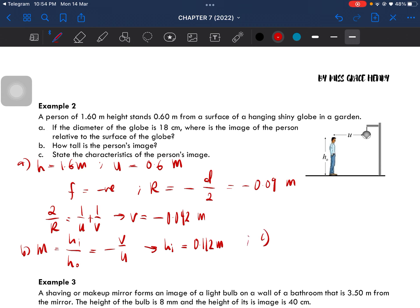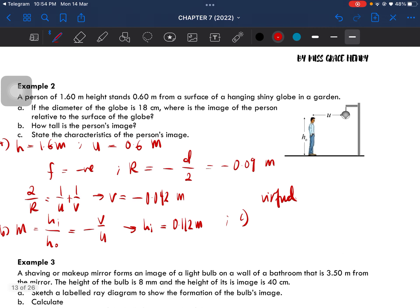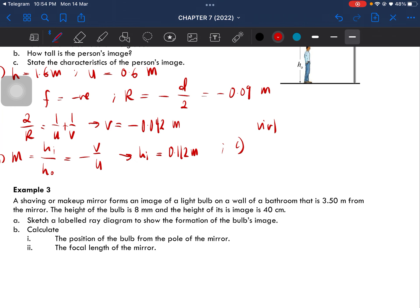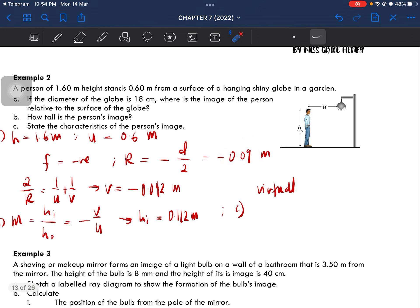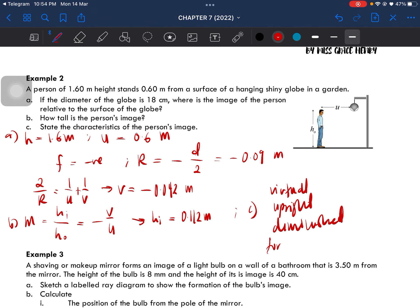What is the characteristics of the person's image? Since it is formed behind the surface, it is visual. If you don't want to know based on the calculation just now, you just have to remember the characteristics for convex mirror. It will be upright, and then diminish, and then lastly, form behind the reflecting surface. Those are the characteristics for convex mirror.